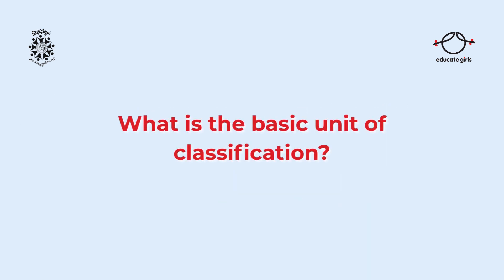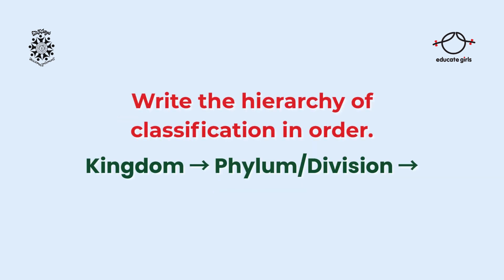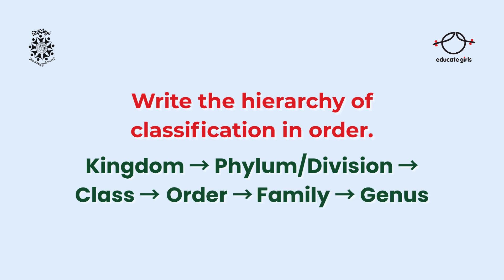What is the basic unit of classification? Species. Write the hierarchy of classification in order: Kingdom, phylum or division, class, order, family, genus, species.